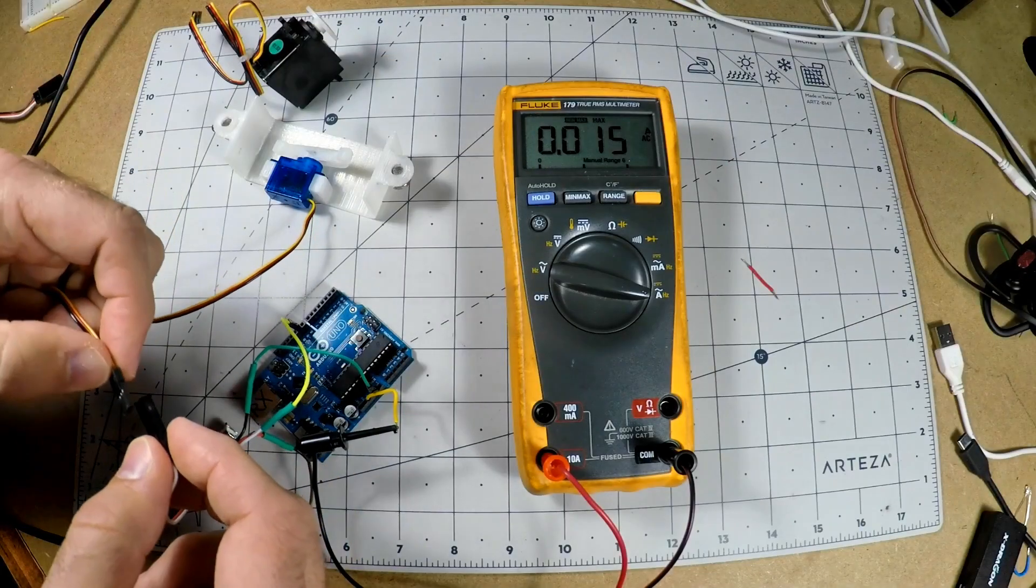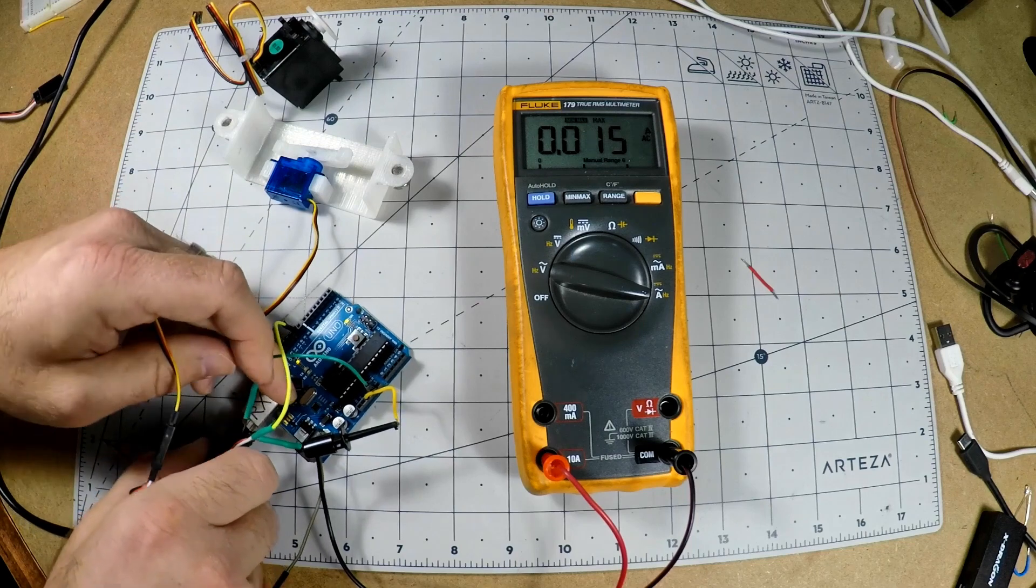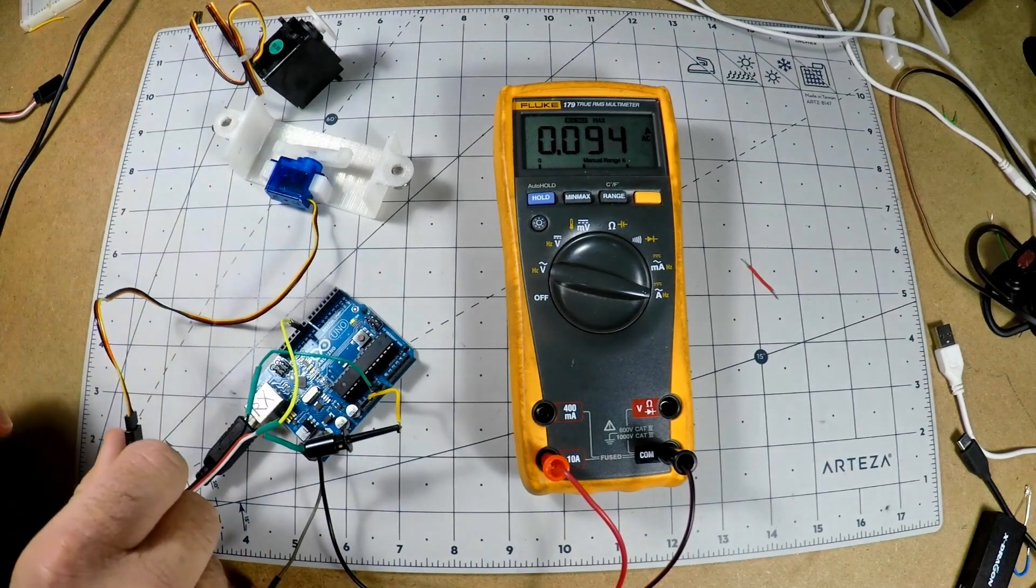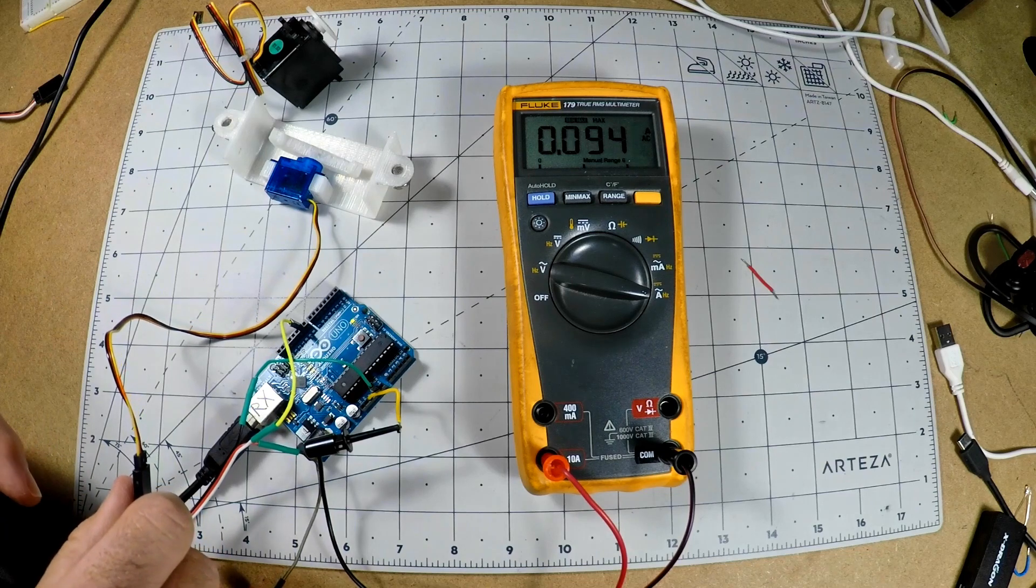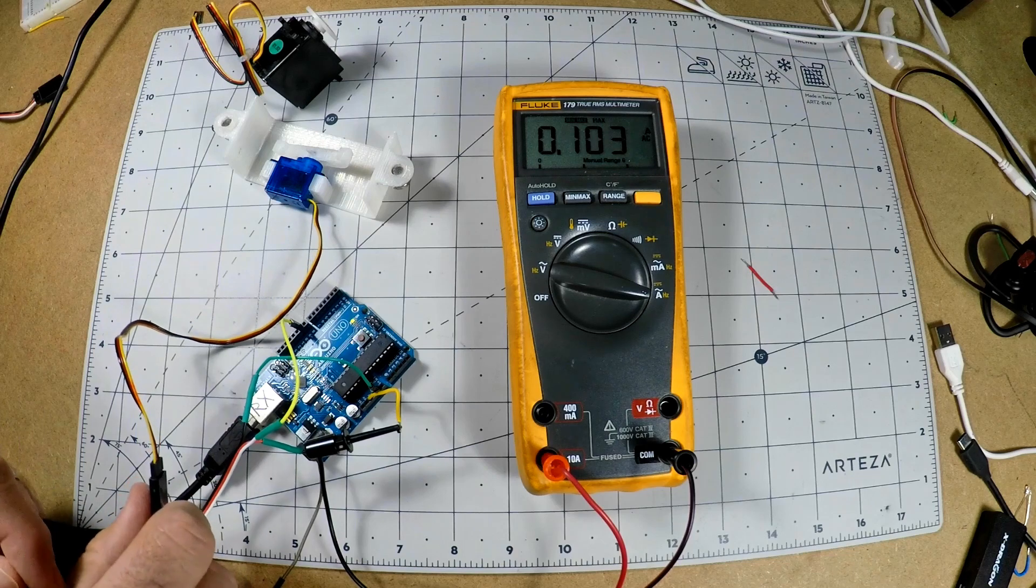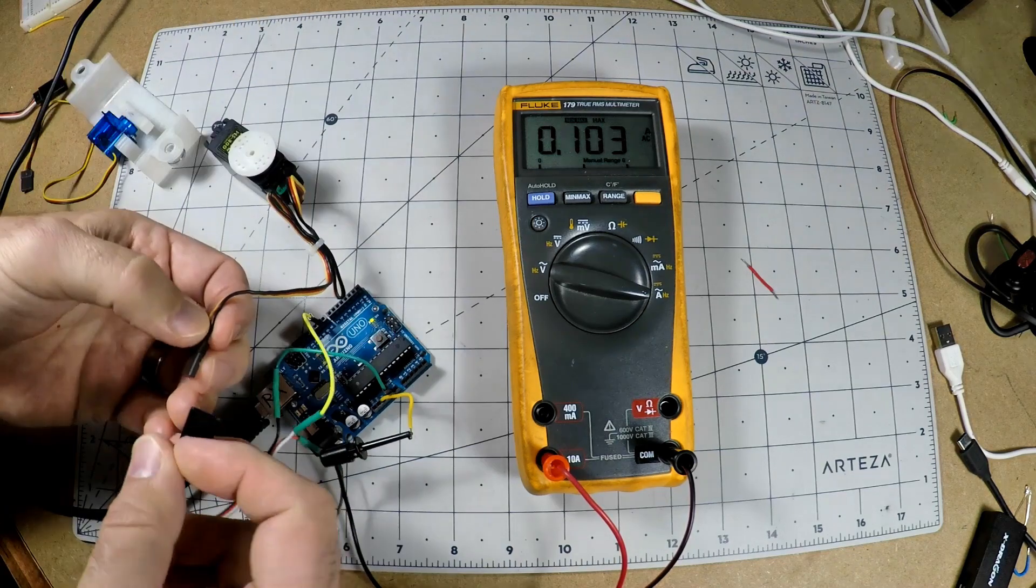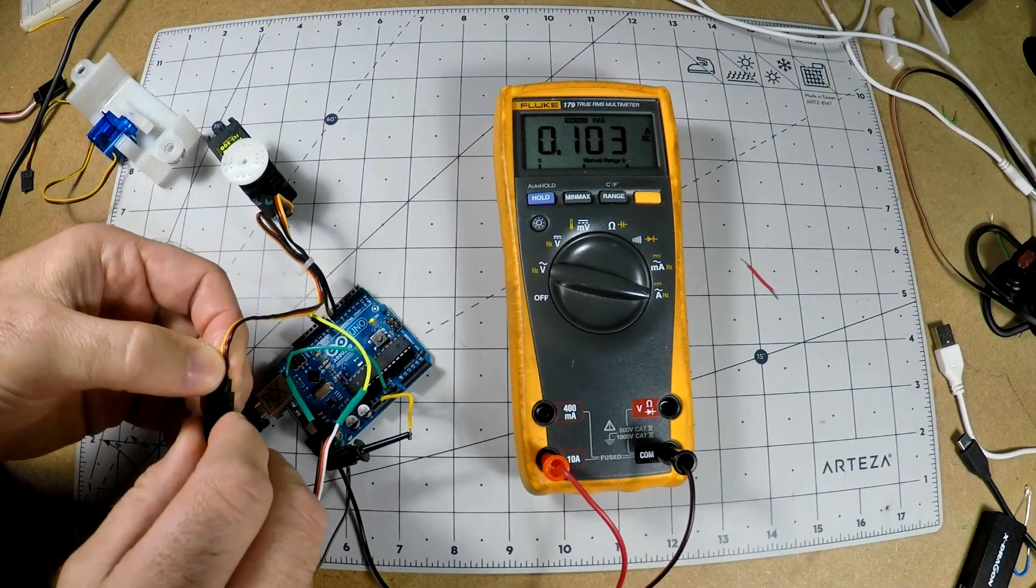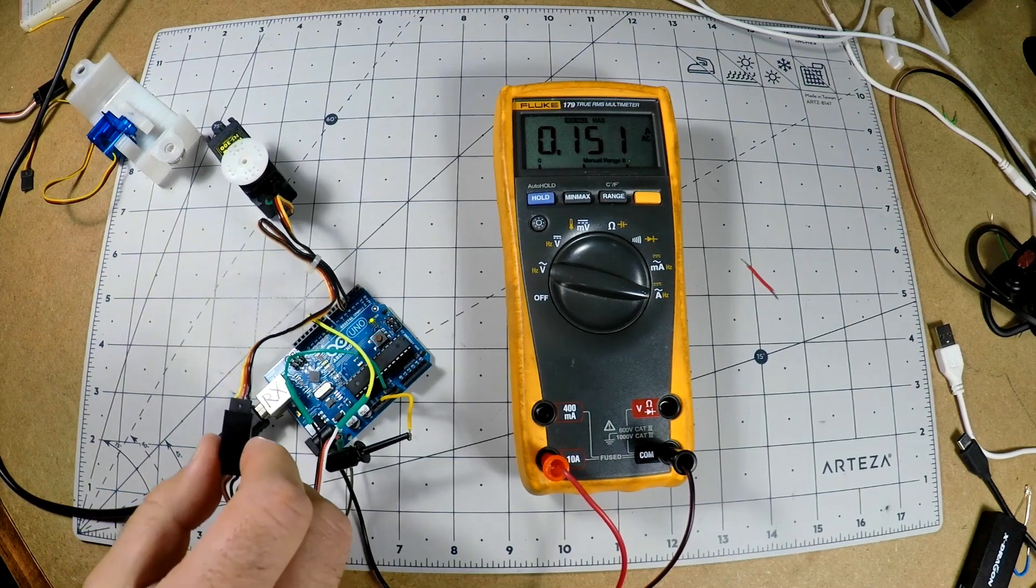And of course, I couldn't resist actually testing this out and seeing just how much current I was using. Here, I'm using a setup without the capacitor itself, so the current maxes out at just under 0.1 amp, or about 100 milliamps. That's using the SG90 servo, so the small one. The large one is about 50% more power. I expected more, to be honest. Note here that I've got my multimeter set up to record the maximum current coming out of it.